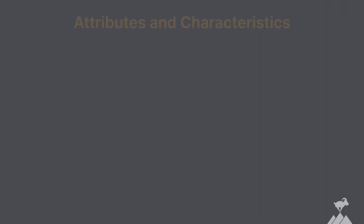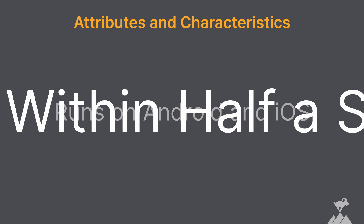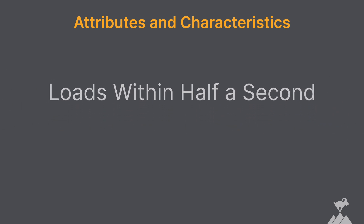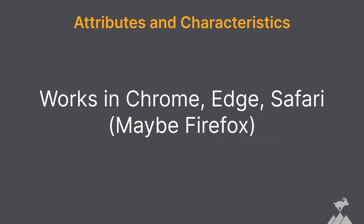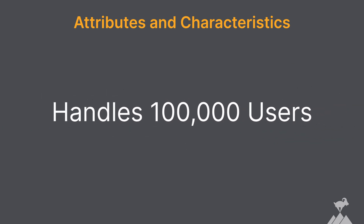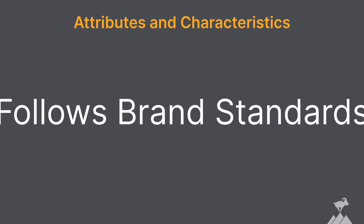When we talk about non-functional requirements, we're not talking about features in the menu or user-facing functionality. We're talking about attributes and characteristics — how the system exists in the world. Things like it runs on Android and iOS, it loads within half a second, it works in Chrome, Edge, Safari, and maybe Firefox, it handles 100,000 concurrent users, and it follows brand standards. These aren't functionality. They're constraints, they're qualities. They often make or break a user's experience, but they're not always obvious.